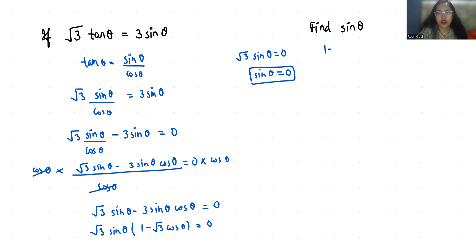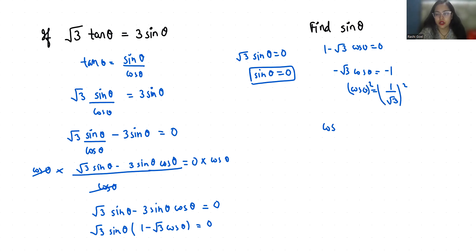From the second case, cos theta equals 1 by root 3. Squaring both sides, it becomes cos squared theta equals 1 by 3.